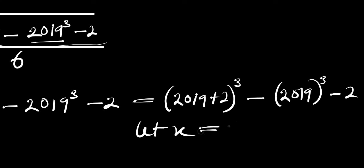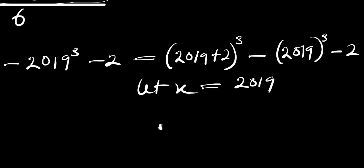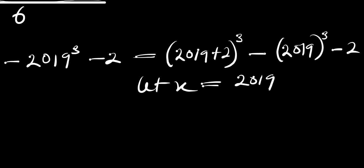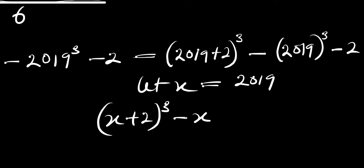Now let x equal 2019. If x equals 2019, we are going to have (x plus 2) raised to the power of 3, minus x raised to the power of 3, minus 2.